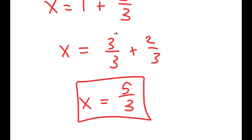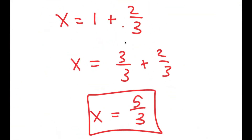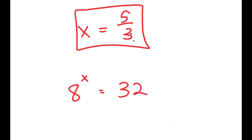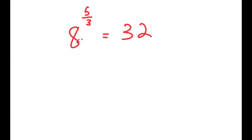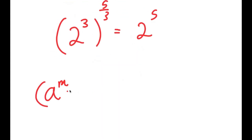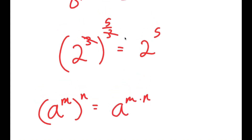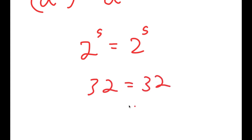Now how do we know that this is the right answer? Going back, we have 8 to the power of x equals 32. We know 8 is the same as 2 to the power of 3, so I get 2 to the power of 3 to the power of 5 over 3, which equals 32, which is 2 to the power of 5. Using the rule a to the m to the n equals a to the m times n, the two 3s cancel out, and I get 2 to the power of 5 equals 2 to the power of 5, or 32 equals 32. This is correct.